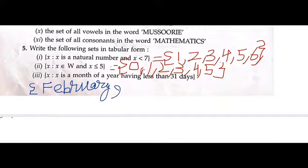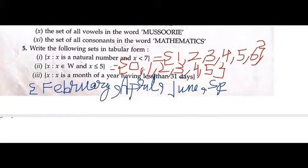June (J-U-N-E), then September (S-E-P-T-E-M-B-E-R), and then you have November. Close the bracket. So these are February, April, June, September, and November. You can write the full spelling.